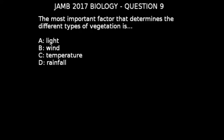JAM 2017 Biology Question 9: The most important factor that determines the different types of vegetation is — A) light, B) wind, C) temperature, or D) rainfall.